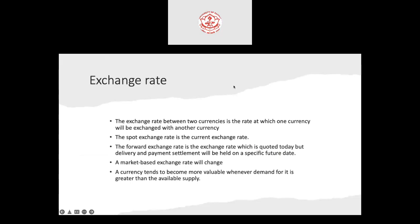The exchange rate between two currencies is the rate at which one currency will be exchanged for another. When we compare the Indian rupee with the US dollar, we can see the weakening of the Indian rupee. The spot exchange rate is the current exchange rate — for example, 76 rupees is equal to 1 US dollar.